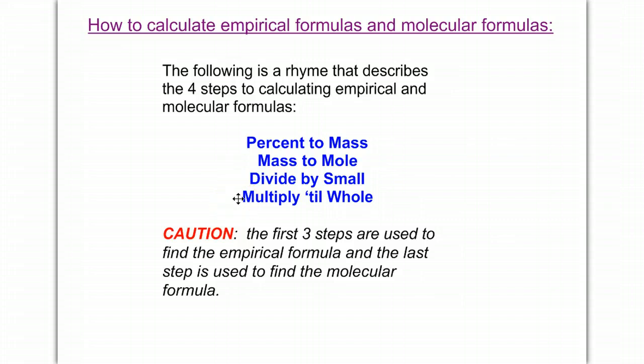The first three steps - percent to mass, mass to mole, divide by small - are going to be used to determine the empirical formula. If we need the molecular formula, then we do the last step, which is multiply till whole.